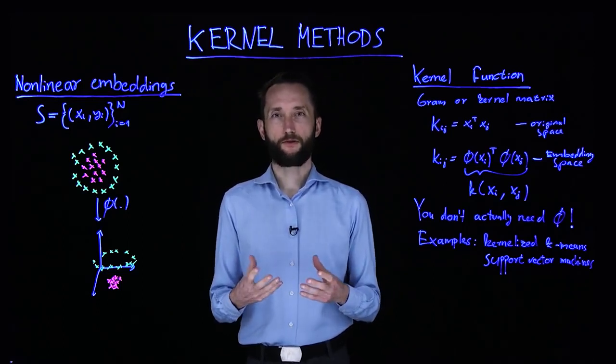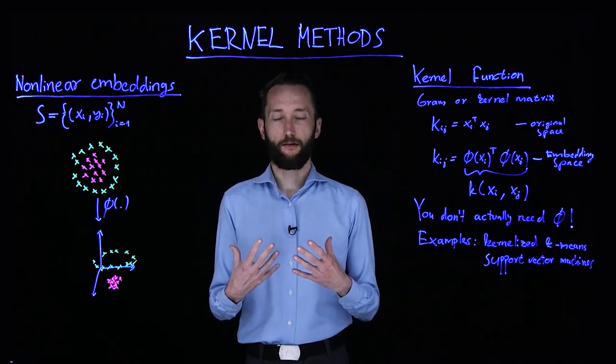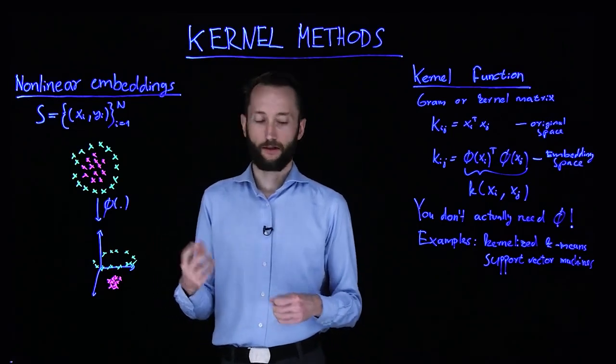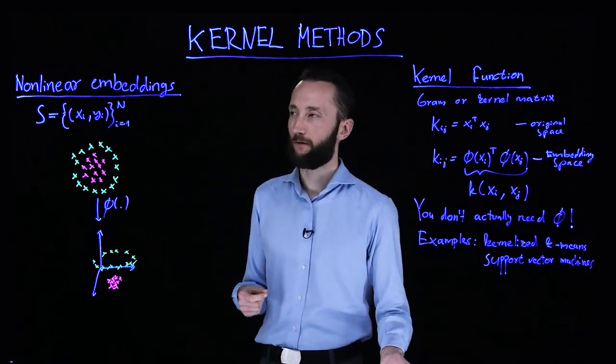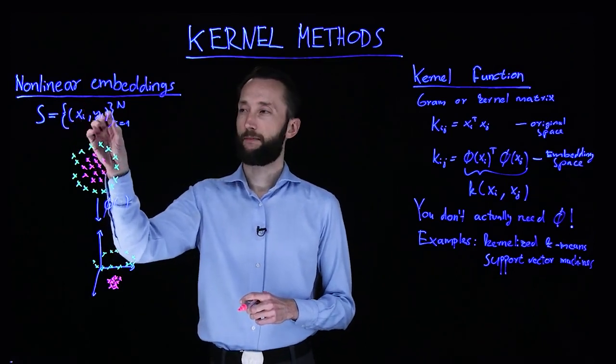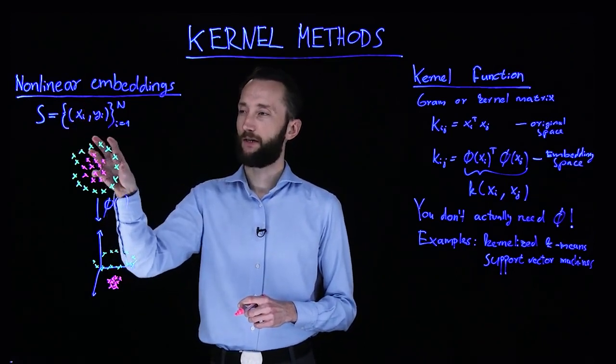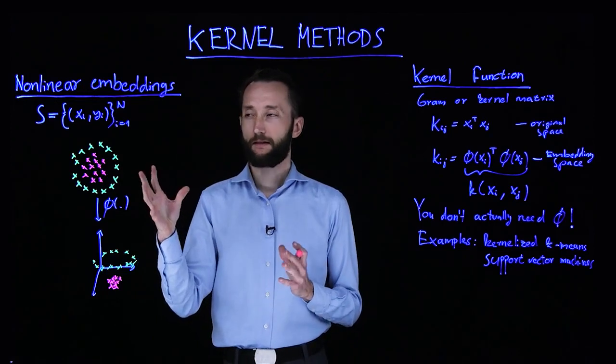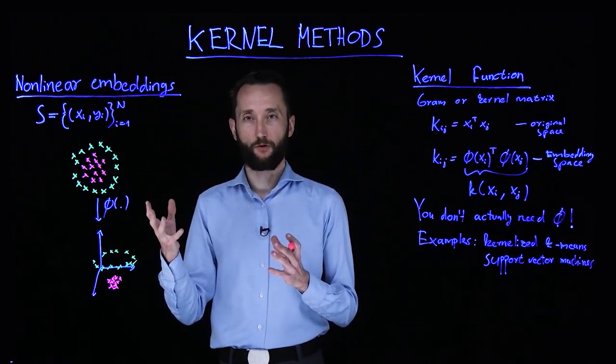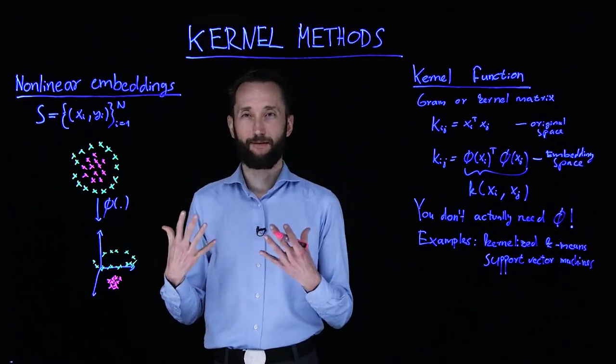What kernel methods do is a kind of nonlinear embedding, but they do it in a clever way. When we talk about nonlinear embedding, what we want to achieve is that given some dataset in some high-dimensional space which has some intrinsic topology, this dataset could be very difficult to classify into two groups by some simple function.